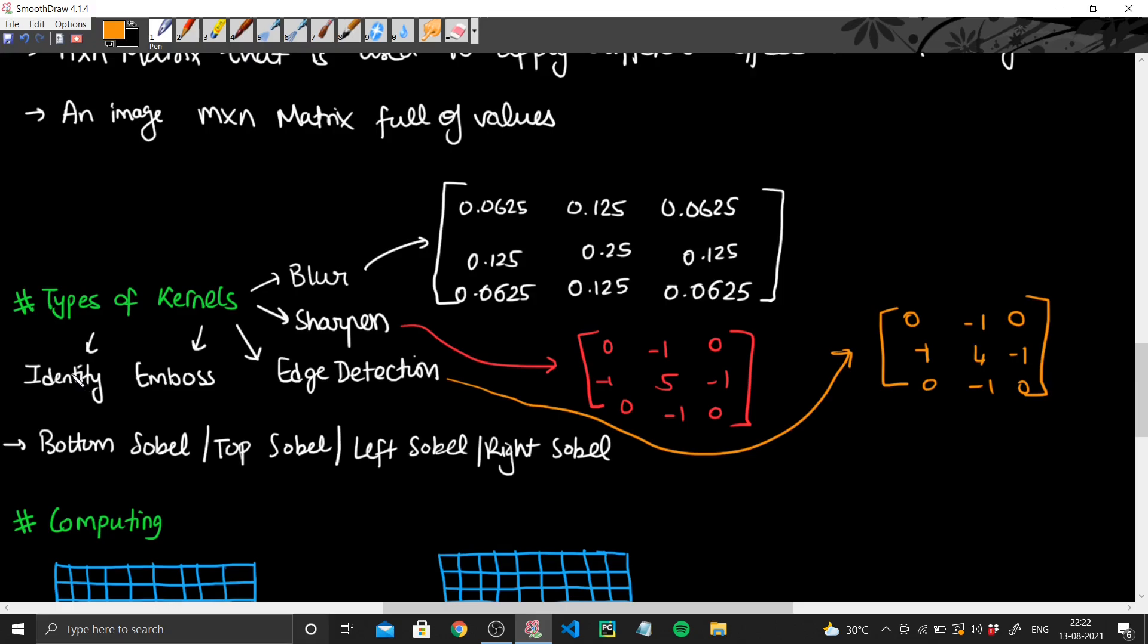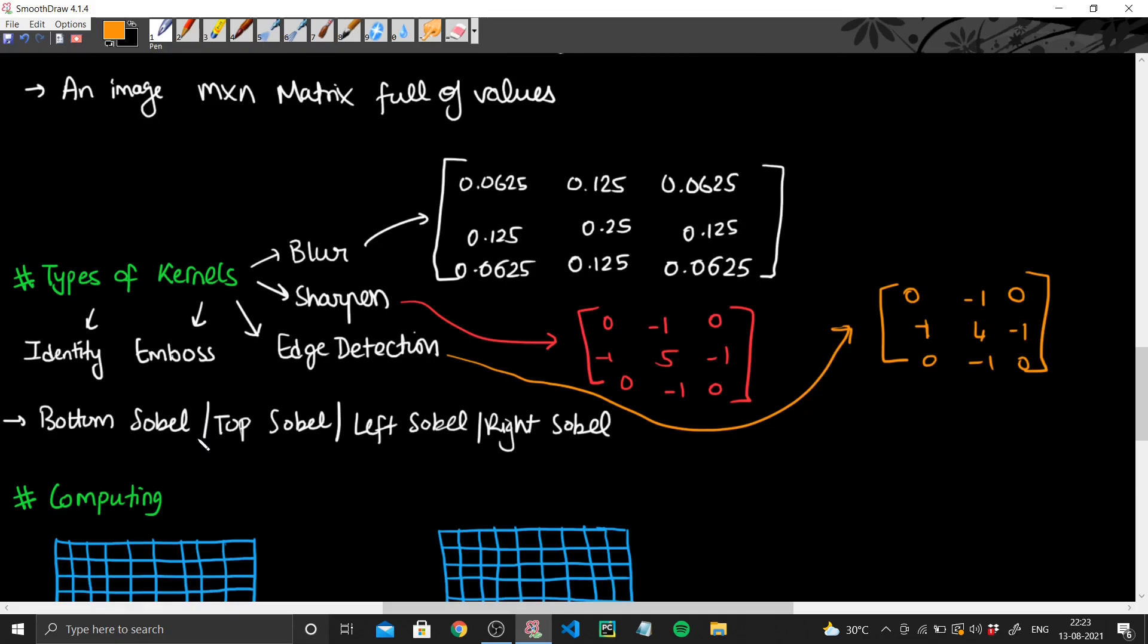Now identity is the same image itself, so it's just all zeros and the central element, that is your, if my matrix is called A, then A 1,1 will be 1 and everything will be 0. That's your identity. And we don't really use emboss and these Sobel, so I won't go into the details as of now. So this is just a variety of the kernels available.